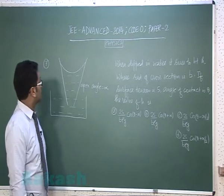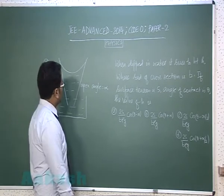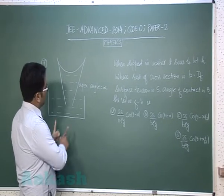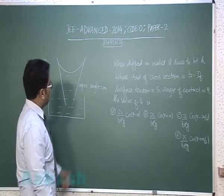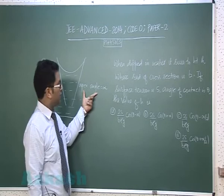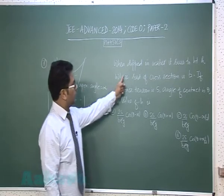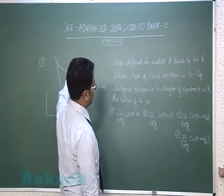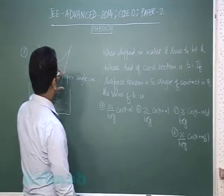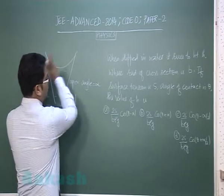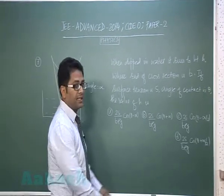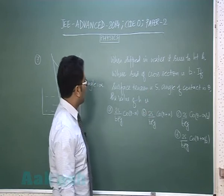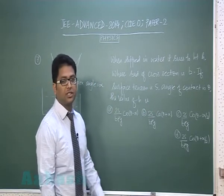Question number seven is from surface tension. It's a capillary but this time it's a truncated cone and it has an apex angle alpha. When dipped in water it rises to a height h and wherever it has rose the radius of cross section is b. If surface tension is s, angle of contact is theta, we got to find the value of h.